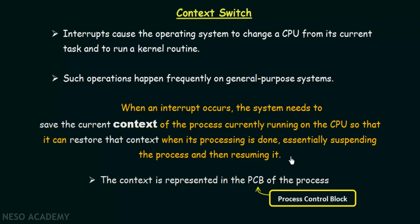By placing the bookmark in that book, you saved the current context of the process you were doing. You did that because after you finish helping your mother, you will come back and resume reading. At that point you need to know where you stopped reading so you can resume from that particular page. Keeping that bookmark is saving the current context. When the work your mother told you is completed, you come back and resume — that means you resume the process you suspended. With that example, try to visualize context switching.